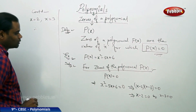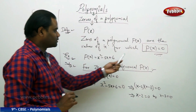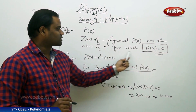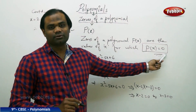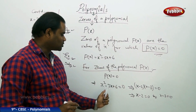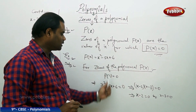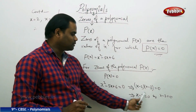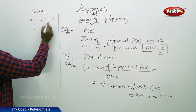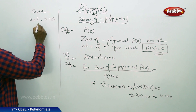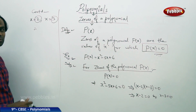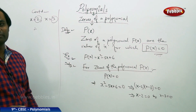Therefore, the zeros of the polynomial are the values of x for which p of x equals zero. Setting p of x equal to zero with the given expression, I obtain two values of x, which are 2 and 3, and these are the zeros of the given polynomial p of x.